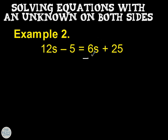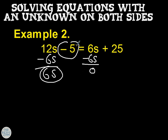Take away 6s from this side and what you do to the left, you do to the right, and what you do to the right, you do to the left. So we take away 6s from this side as well. You get left with 6s over there. And we can write a new equation. We've got 6s minus 5 equals 25.